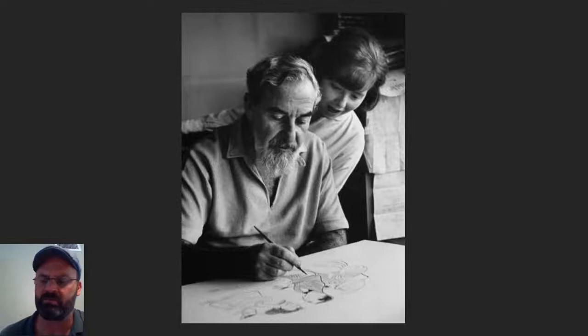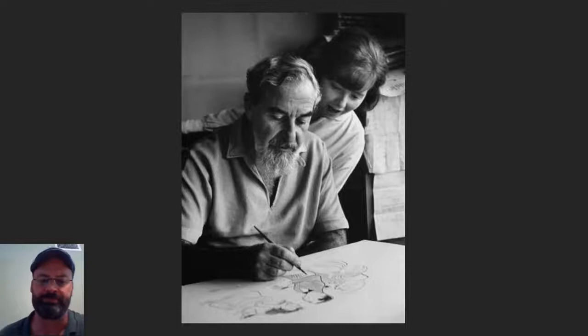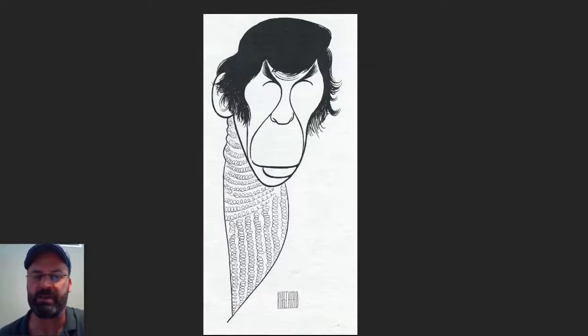In 1945, Al and his wife Dolly had their only child, a daughter named Nina. There's Nina watching her dad draw. Soon after she was born, Al started hiding her name in his pictures — he just thought it'd be kind of fun to do that.